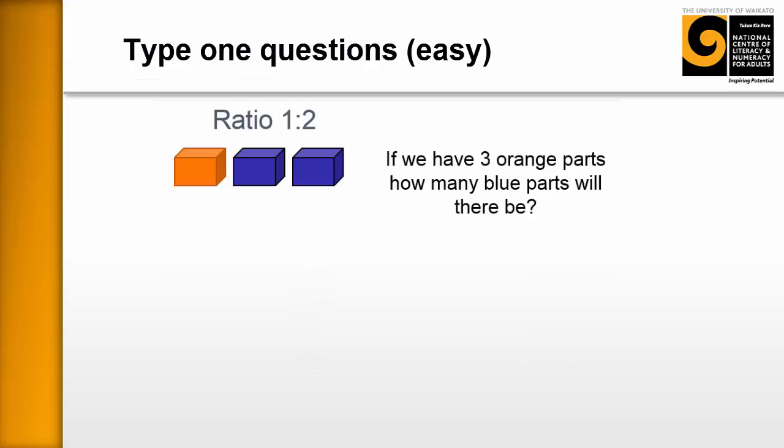Here's the first of the type one questions, and this is an easy question. They have the ratio in front of them there, one to two. And we ask them, if you were to have three orange parts, how many blue parts will there be?